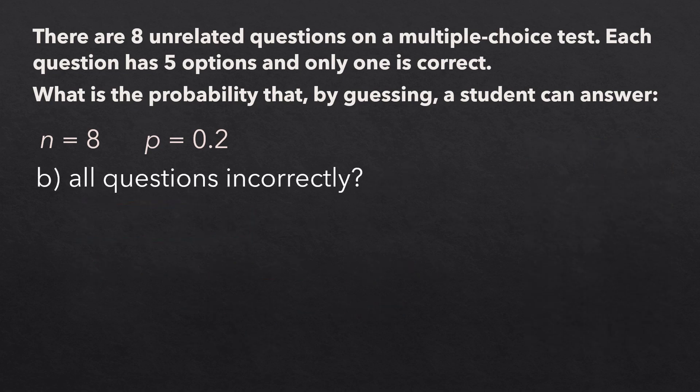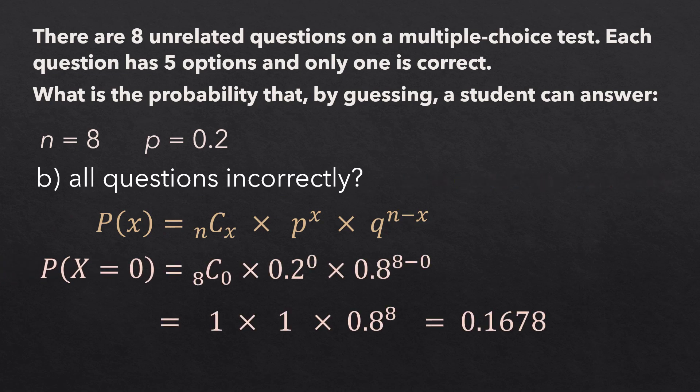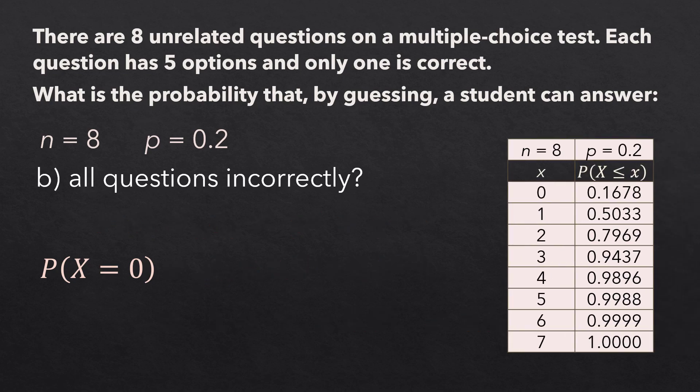For b, answering all questions incorrectly means answering 0 questions correctly. Therefore, x equals 0. And plugging that into the formula gives 0.1678. Using the cumulative binomial table, we see here that the probability that x is less than or equal to 0 is 0.1678. Note that the probability that x equals 0 is the same as the probability that x is less than or equal to 0, since there is no x value below 0.